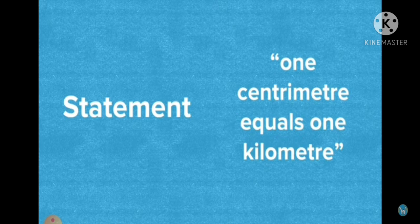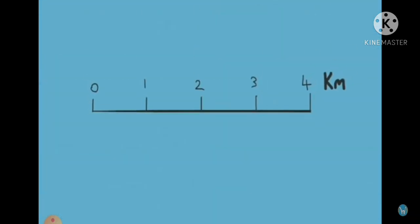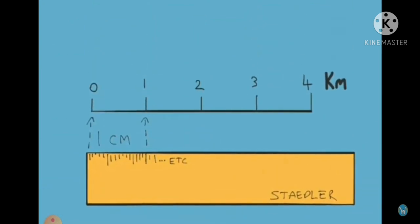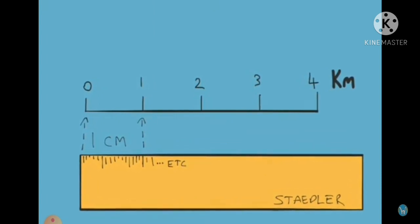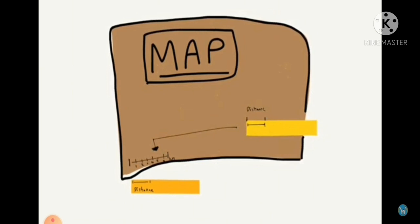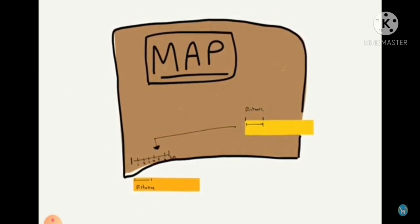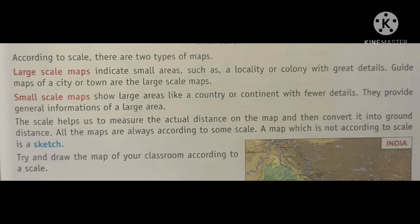The statement scale is self-explanatory — a statement is simply written, for example: 1 cm equals 1 km. Line scales are bars marked at even intervals. You measure the distance on your map, then go to the scale and measure that same distance to see how many kilometers it represents.